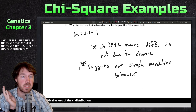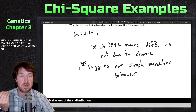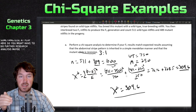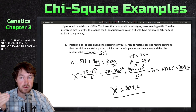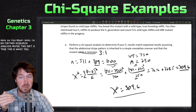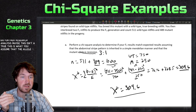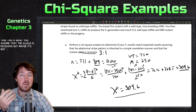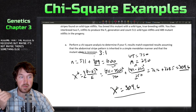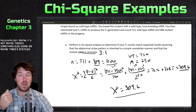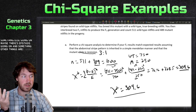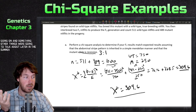The conclusion here: the difference is not due to chance, which suggests it's not simple Mendelian behavior. Something else is at play — you'd need further research. Maybe the allele isn't truly recessive, or perhaps there's epistasis or another mechanism involved, which we'll cover later in the semester.